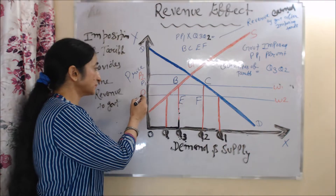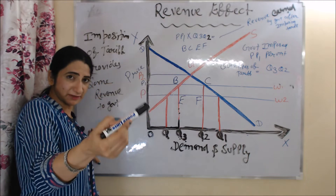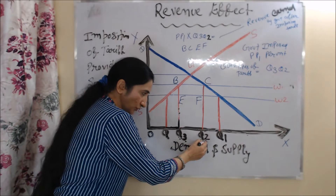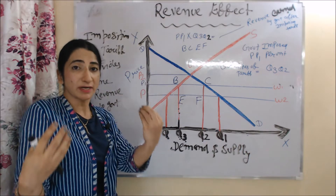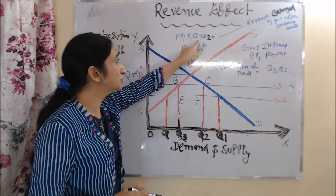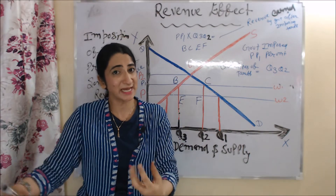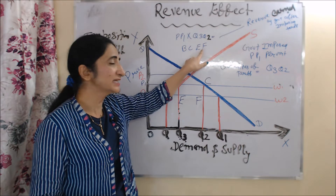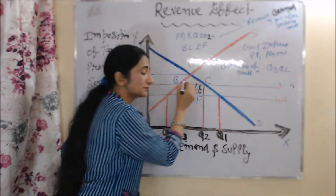Suppose the government imposes PP1 per unit of tariff. After imposing tariff, the total quantity of import is Q3Q2. When we multiply PP1 with Q3Q2, it equals the revenue earned by the government after imposing tariff. PP1 multiplied by Q3Q2 will be equal to area BCEF. So BCEF is basically the revenue earned by the government after imposing tariff.